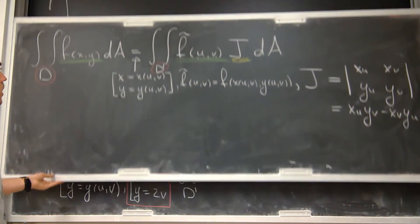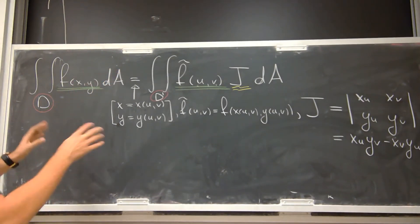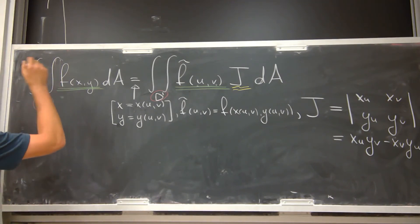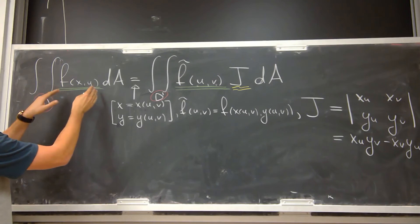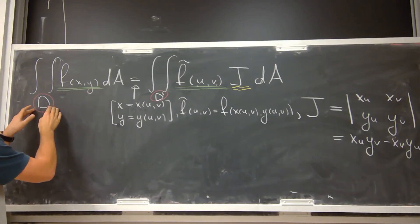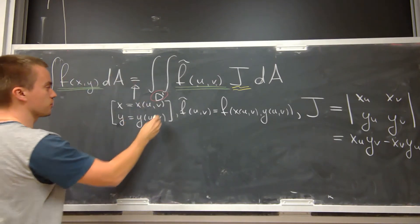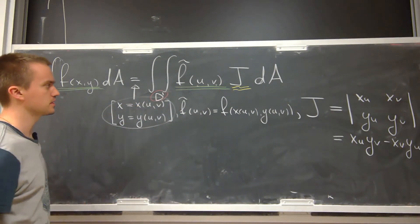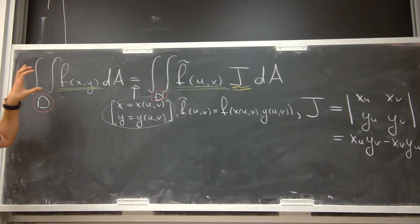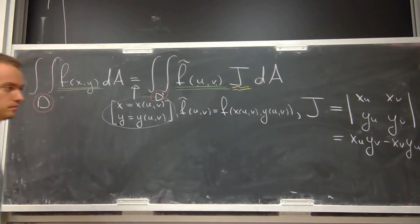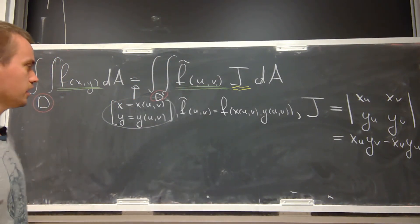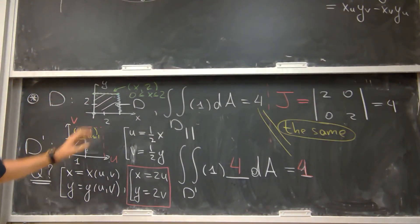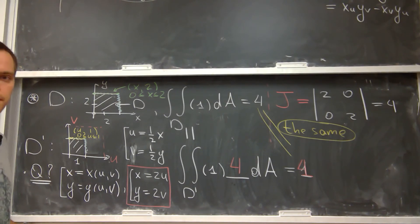In the next video I'll show a more involved example of change of variables: when you are given a double integral where the function or the region is really complicated, you can apply change of variables — either guess the transformation or use a given one — to compute the original integral in terms of the new variables. Thank you for watching, I hope you enjoyed this video.